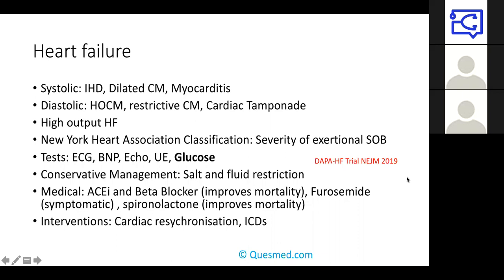Conservative management involves salt and fluid restriction to reduce fluid burden. Medically, ACE inhibitors and beta-blockers improve mortality. Furosemide is symptomatic — it doesn't have much effect on mortality. Spironolactone also improves mortality and can be added later. Interventional options include cardiac resynchronisation therapy or implantable defibrillators — very specialist decisions. In a viva, always structure your answer: conservative management, then medical treatments, then surgical or interventional options.